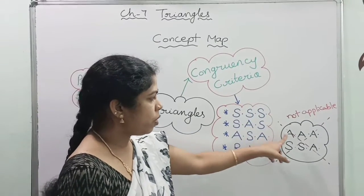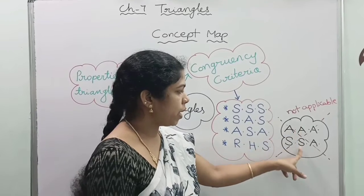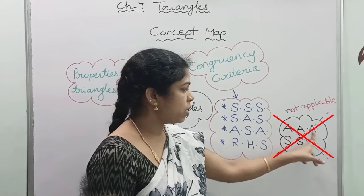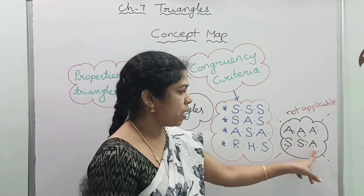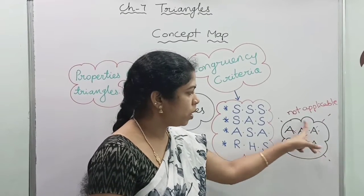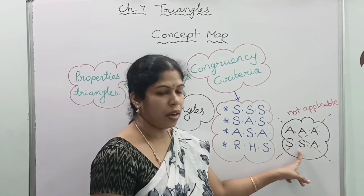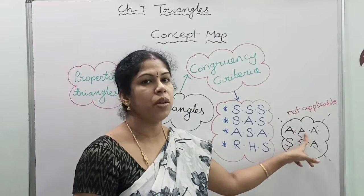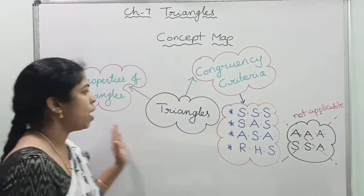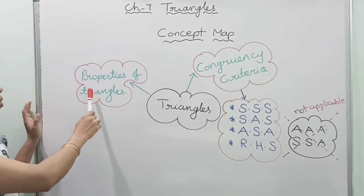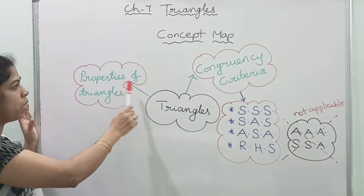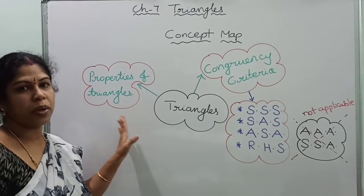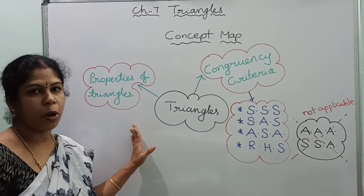We have two more categories which will not be applicable: AAA congruency and also SSA. By observing only these criteria we cannot say the two triangles are congruent — we need some more information. The next topic you will be learning is properties of triangles, and in this class by applying those properties we are going to solve some problems.